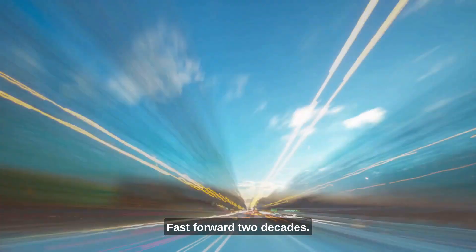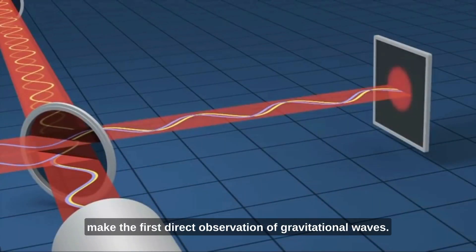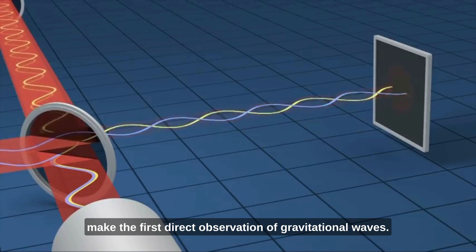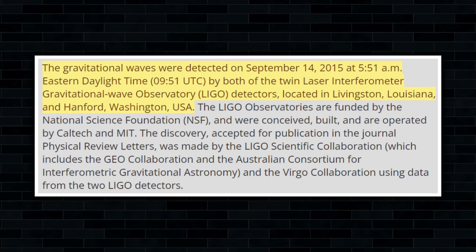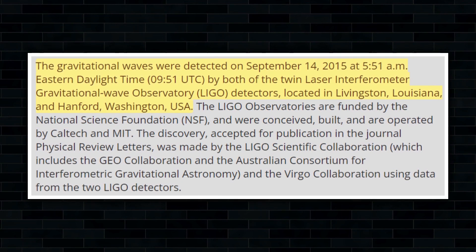Fast forward two decades, LIGO had used a device on Earth to make the first direct observation of gravitational waves. The gravitational waves were found on September 14, 2015 at 5:51 AM EDT.